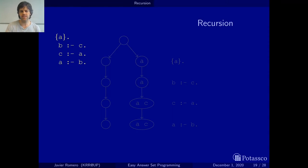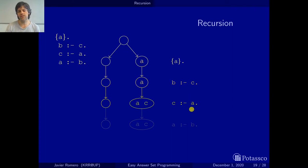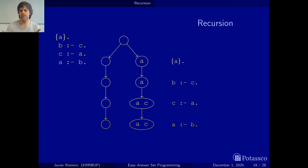Now let's see what are the answer sets of this program. Initially we start with the empty set as always. Then we can apply the choice rule and we have the empty set and the set with A. If we apply the rule B if C, both sets remain the same because C does not belong to them, so there's no effect. Now with C if A, since we have A, we must add C, and here there's no A so everything remains the same. And now the only rule left is A if B, and B is not here, so nothing happens. So somebody could think the answer sets are the empty set and {A}, but this is not the way to go, because we have not applied the rules in order.